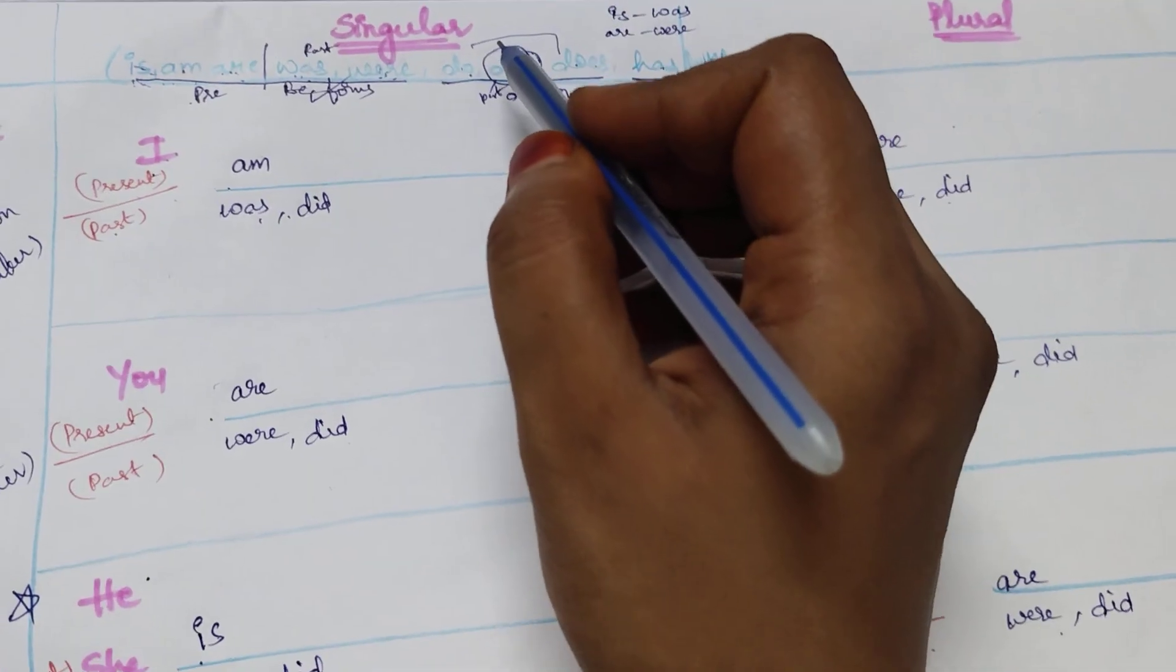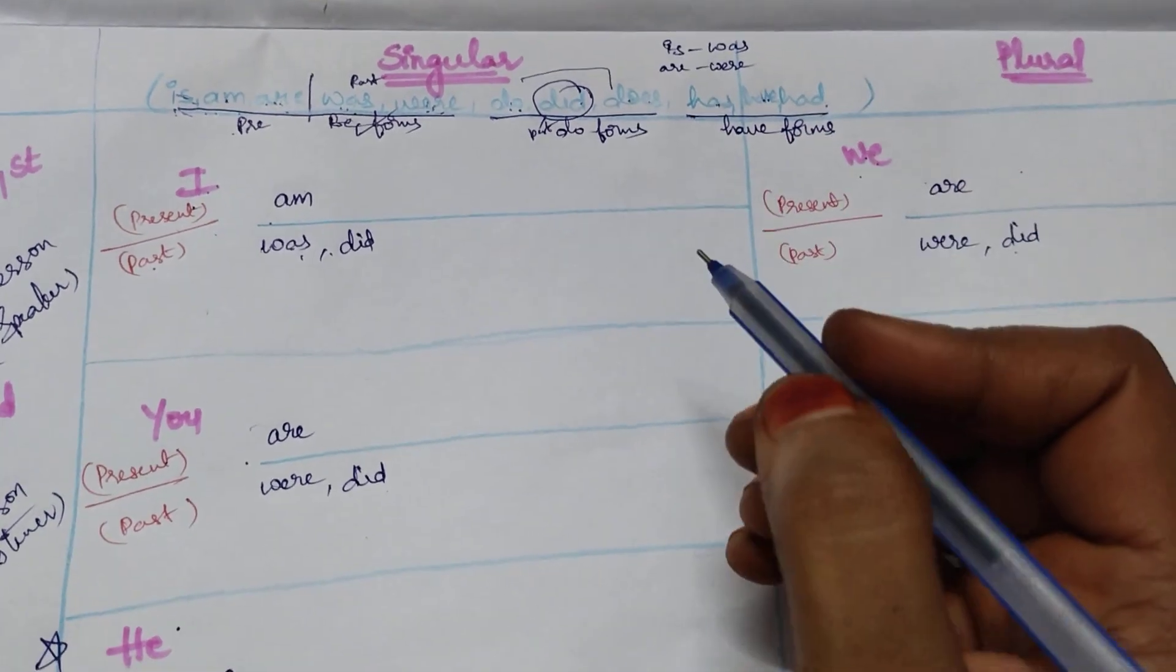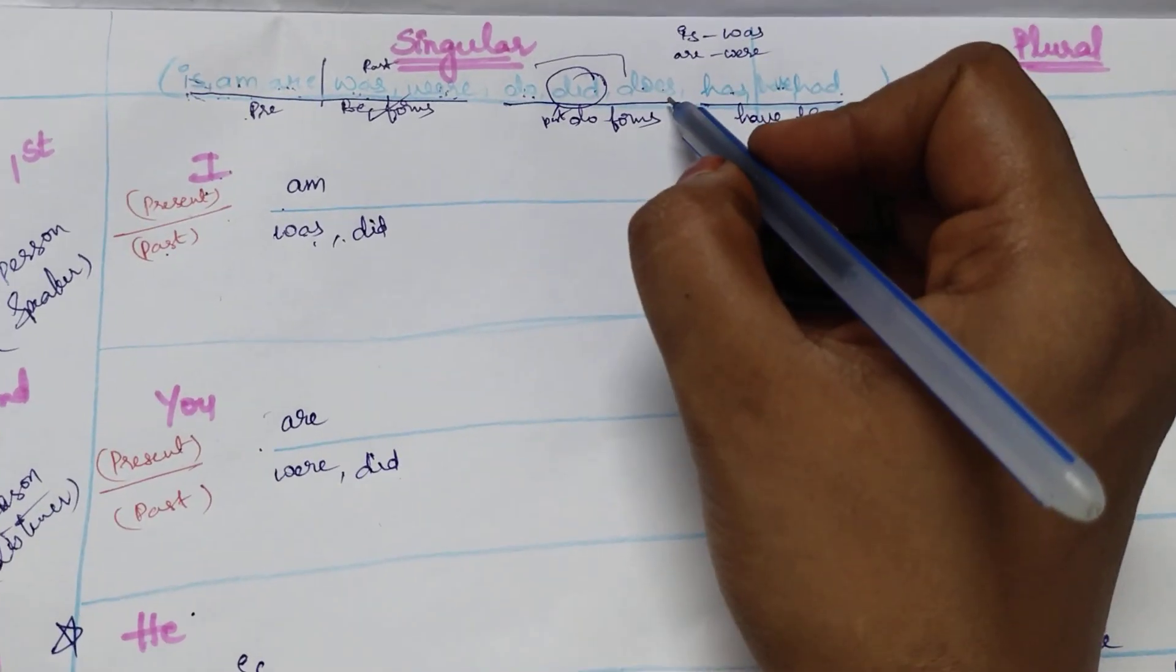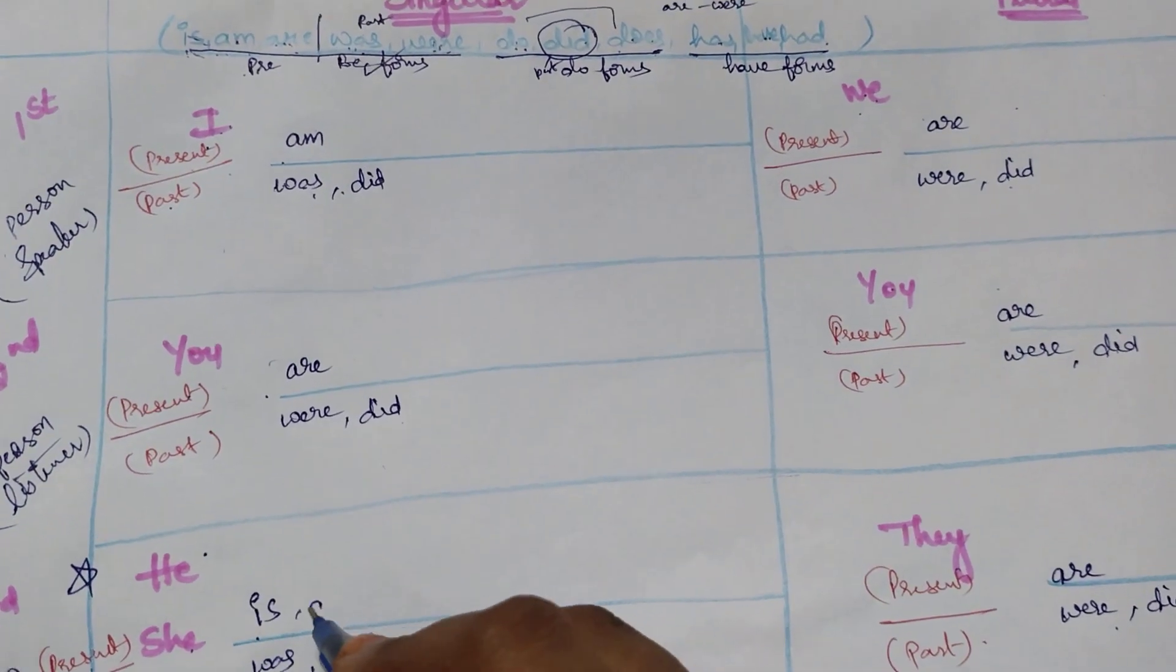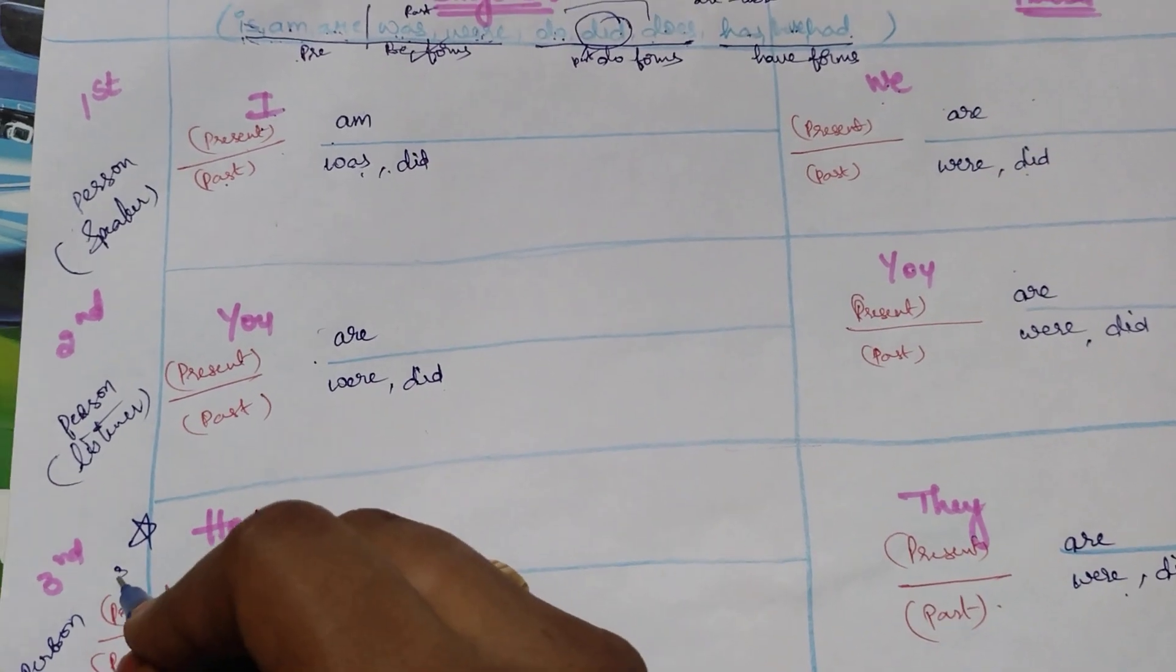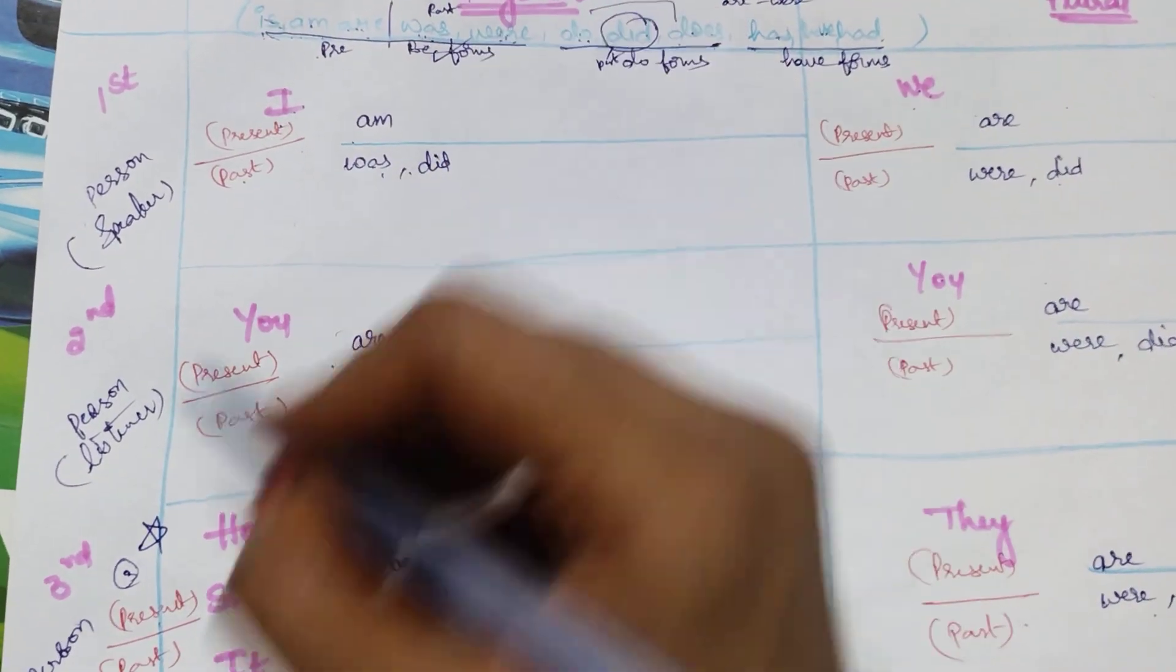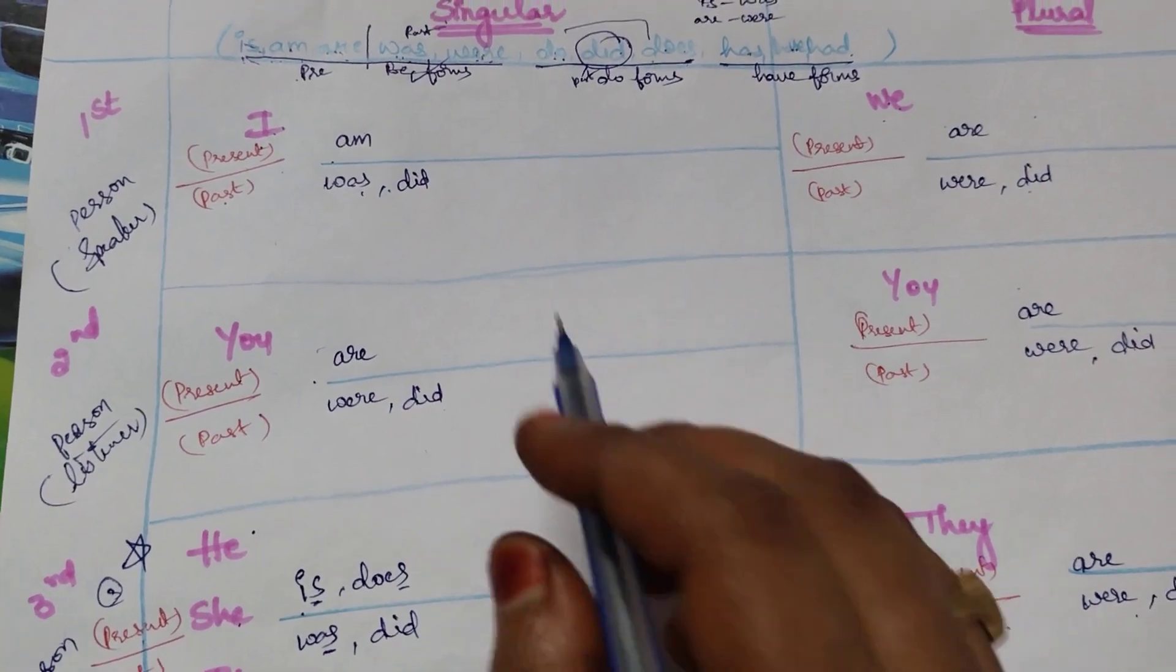Now only the problem will be when it is present - do or does. For that simple thing I will tell you, yes, does. Yes ending letters. So he, she, it. I told you put a star. Star, yes. Third person singular, yes, which ends with yes. Okay, does.